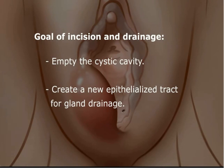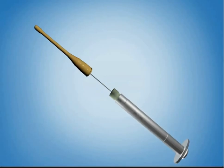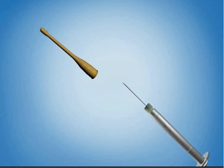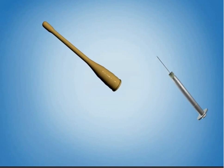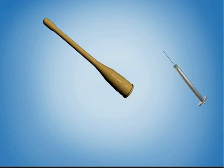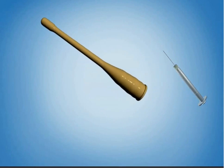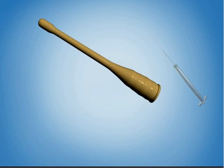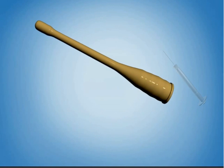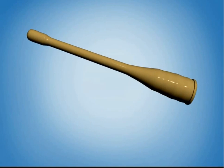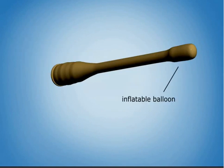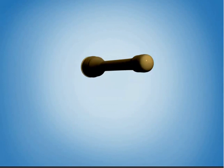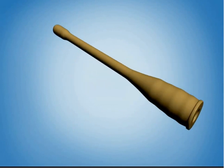For this purpose, a word catheter is used. This catheter appears similar to a very small Foley catheter. It is constructed of a 1-inch latex tube stem that has an inflatable balloon at one end and a saline injection port at the other.